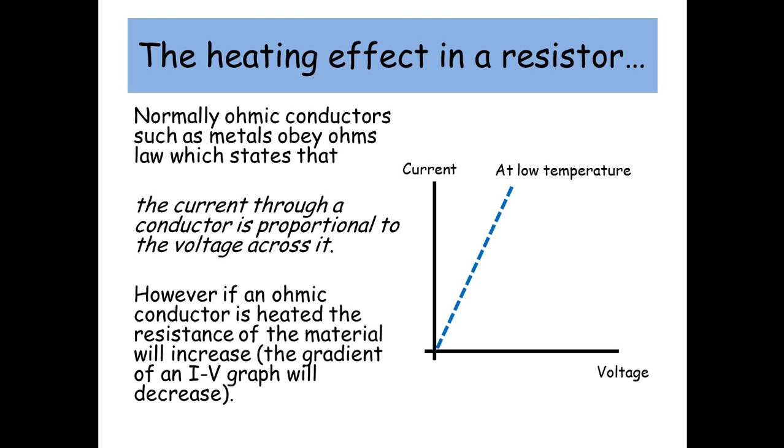So at a low temperature, you don't need a lot of voltage to get a current flowing through your ohmic conductor. However, at a very high temperature, the resistance increases. So even at large voltages, the current actually decreases.